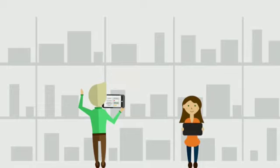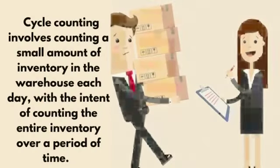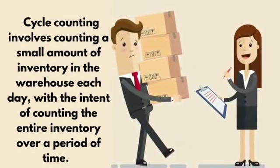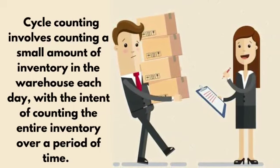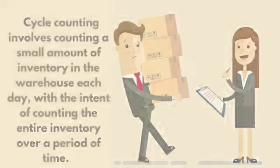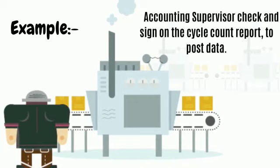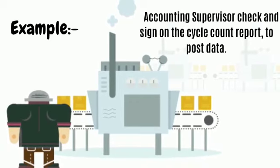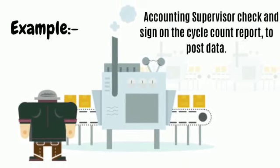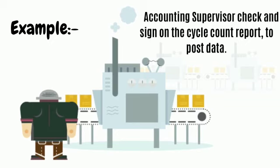Cycle Counting: Cycle counting involves counting a small amount of inventory in the warehouse each day, with the intent of counting the entire inventory over a period of time. For example, accounting supervisors check and sign on the cycle count report to post data.